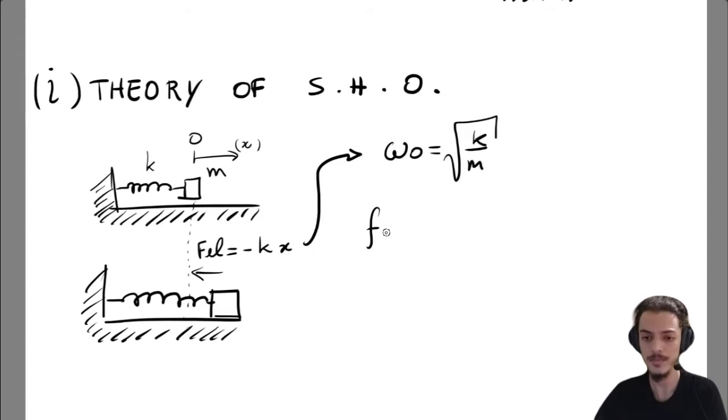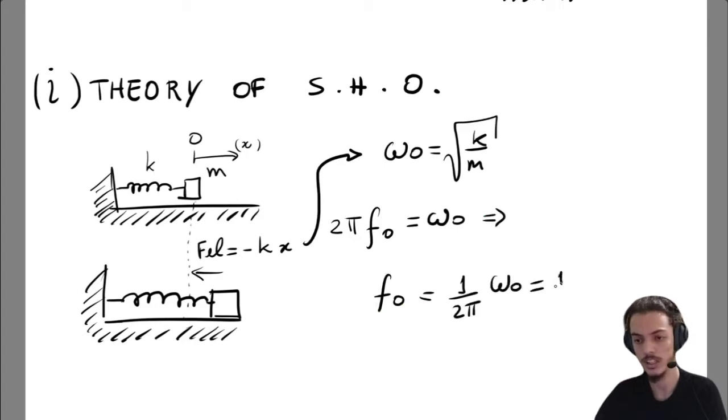And thus we can write the natural frequency of the system. We know that 2π times the frequency is the angular frequency, so we can write the natural frequency as one divided by 2π times ω₀, that is one divided by 2π times the square root of k divided by m.